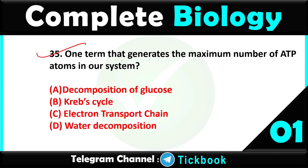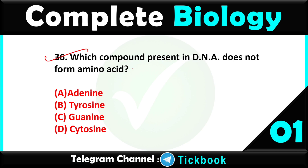Question thirty-five: which term generates the maximum number of ATP in our system — option number C is the right answer: electron transport chain. Question thirty-six: which compound present in DNA does not form an amino acid — option number B is the right answer: thymine is not an amino acid.